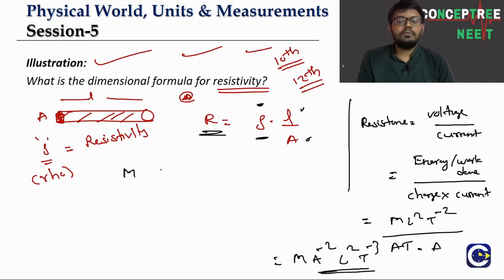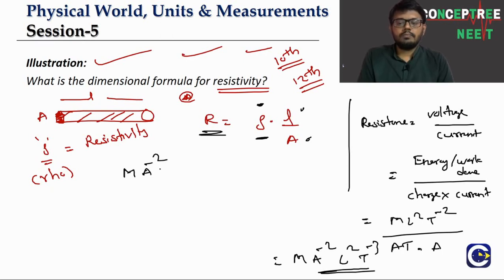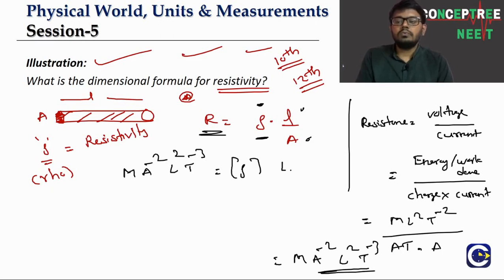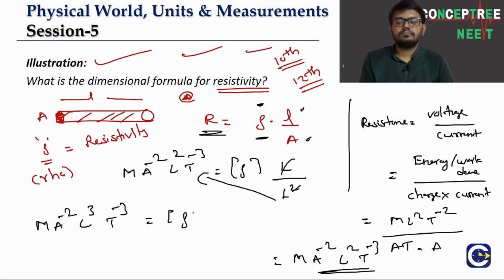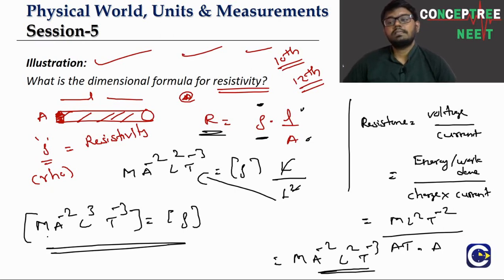Now using the formula R = ρL/A: [M L² T⁻³ A⁻²] = [ρ] × L / L². So [ρ] = M L² T⁻³ A⁻² × L = M L³ T⁻³ A⁻². Wait — rearranging: [ρ] = [R] × [A] / [L] = M L² T⁻³ A⁻² × L² / L = M L³ T⁻³ A⁻². But correcting: it gives M A⁻² L³ T⁻³, which is the dimensional formula for resistivity.